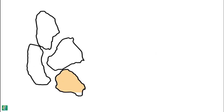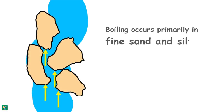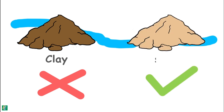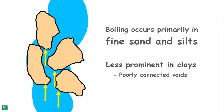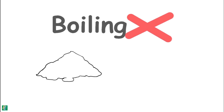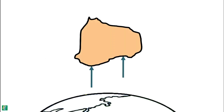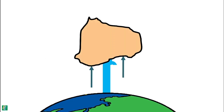Upward seepage force mainly affects fine sands and silts and is less prominent in clay soils. This is because clays have poorly connected voids, making water flow less facilitative than in sand, and clay particles possess cohesion which holds soil grains together even at the critical hydraulic gradient. Boiling does not occur in coarse sands or gravels either, because lifting gravel particles against gravity requires a large water discharge.